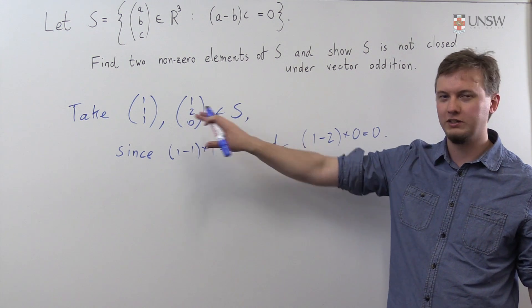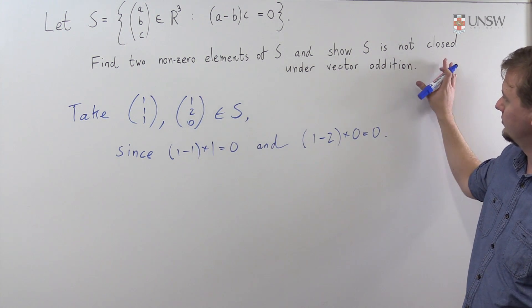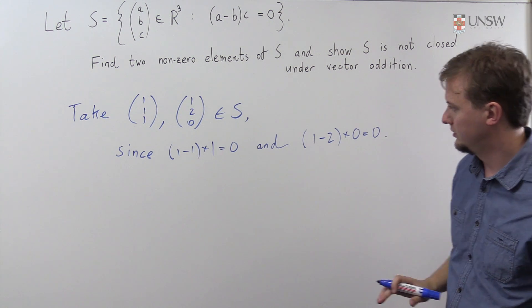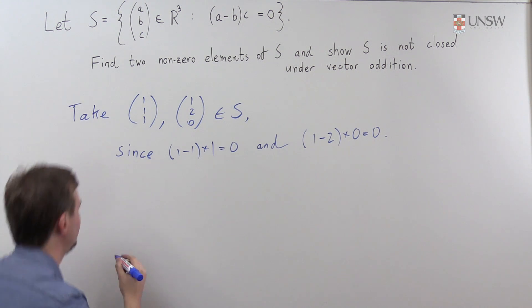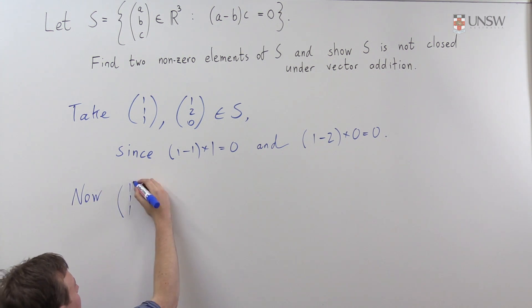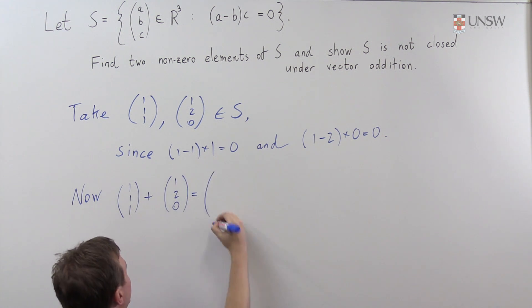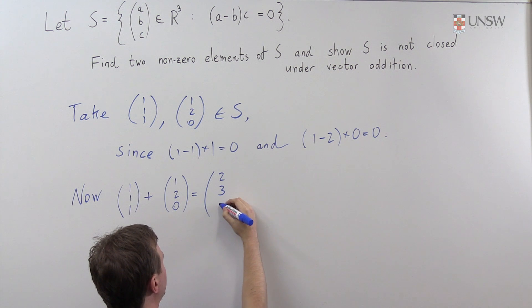And now I'm actually going to use these two vectors to show this second property doesn't hold, that this set is not closed under addition. So let's actually consider what happens when we take the sum of these two vectors. So if we take the sum, (1, 1, 1) plus (1, 2, 0), well that is equal to (2, 3, 1).